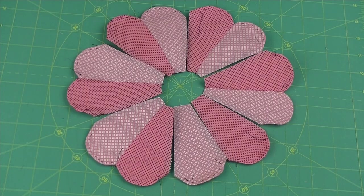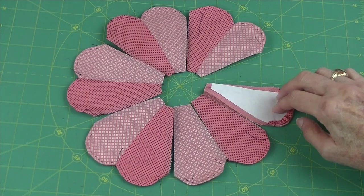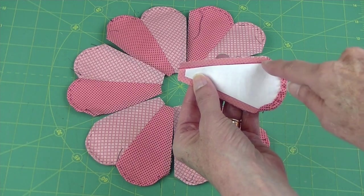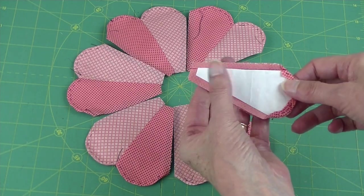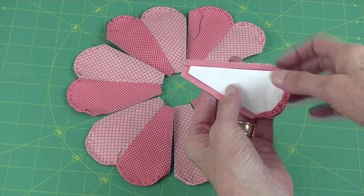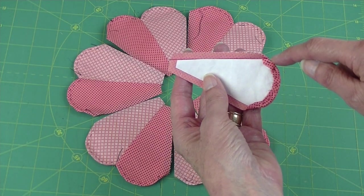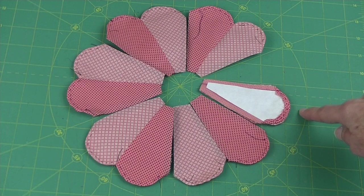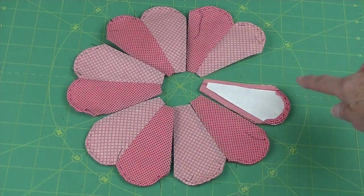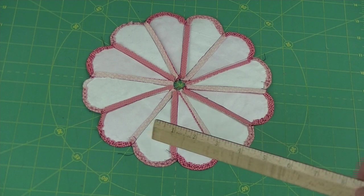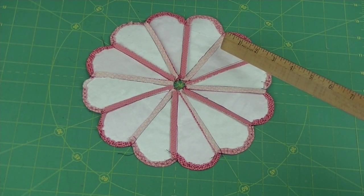Lay out your block. Put right sides together and stitch along the paper's edge. Don't worry if the paper comes up. You can just go back to the iron and press it. Make sure to back stitch to lock your stitches here. Continue in this manner until all the petals have been stitched together. Press the seams in the same direction all the way around.